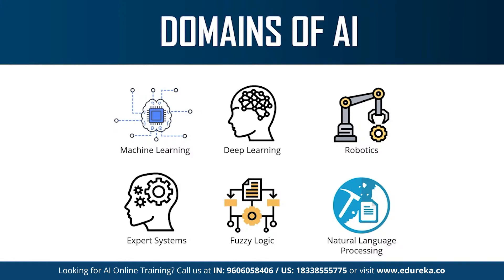Natural language processing refers to the science of drawing insights from natural human language in order to communicate with machines and grow businesses. An example of NLP is Twitter and Amazon — Twitter uses NLP to filter out terroristic language in tweets, while Amazon uses NLP to understand customer reviews and improve user experience.